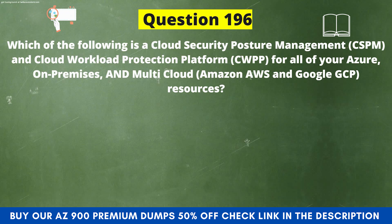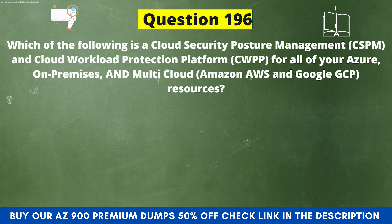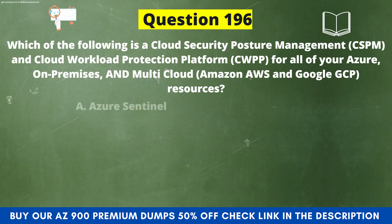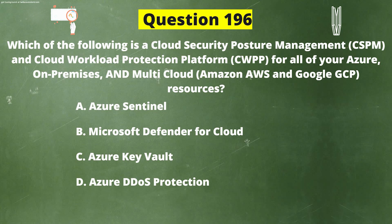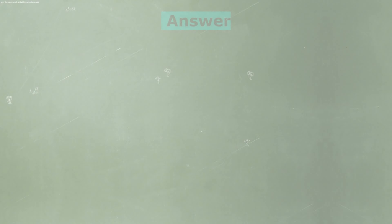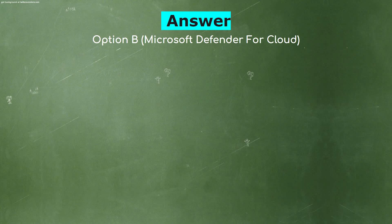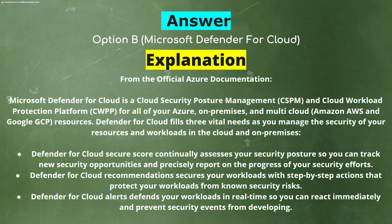Next question: Which of the following is a Cloud Security Posture Management (CSPM) and Cloud Workload Protection Platform (CWPP) for all of your Azure, on-premises, and multi-cloud (Amazon AWS and Google GCP) resources? The options are: A) Azure Sentinel, B) Microsoft Defender for Cloud, C) Azure Key Vault, D) Azure DDoS Protection, E) Azure Front Door. The correct answer is option B: Microsoft Defender for Cloud.